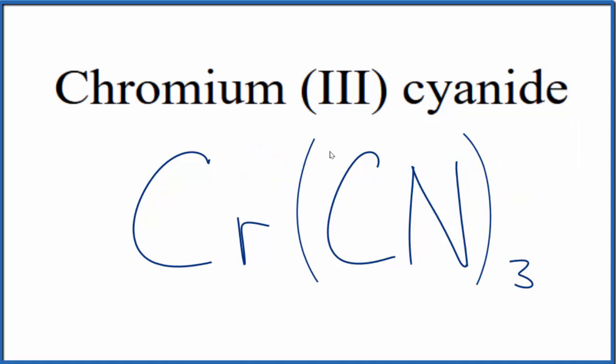And that gives us the formula for chromium (III) cyanide, Cr(CN)3. This is Dr. B, and thanks for watching.